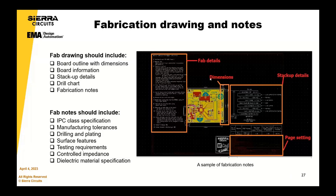A typical fab drawing would have the fab details, the stack up if it's a controlled build, IPC requirements, surface feature requirements. It's important because sometimes we have conflict in data — a purchase order asking for something, a fab drawing asking for something else, and a specification asking for something else. You get into a battle of documents — which one is correct: the PO, the fab drawing, or the specification? We ask for all three and follow an order of precedence based on our ISO rules. If we don't get this, all we really have to work off is the works order or purchase order.